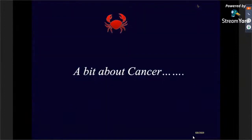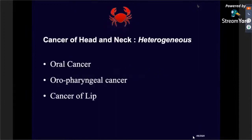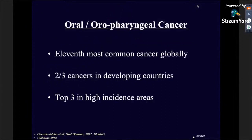We need to know a little bit about cancer. Cancer of the head and neck is a heterogeneous group — heterogeneous in etiology, molecular nature, genetic profile, prognosis, and management protocol. You have classic oral cancer associated with habits like tobacco and areca nut; oropharyngeal cancer, which is largely HPV-related; and cancer of the lip, associated with actinic insult. Oropharyngeal cancer is the 11th most common cancer globally. Unfortunately, in developing countries, two out of every three cancers happens to be oral cancer, and in high-incidence areas like India with rampant tobacco and areca nut use, it is among the top three cancers.